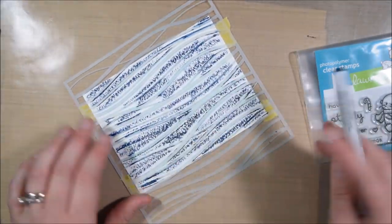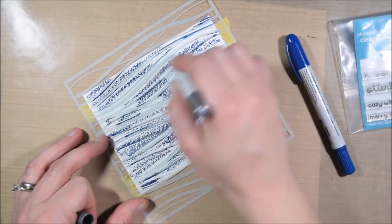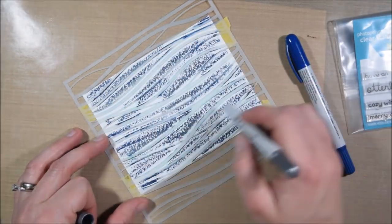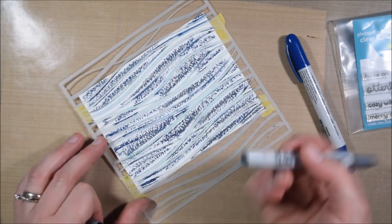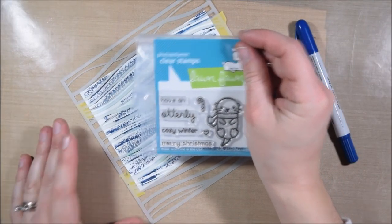I'm using the Simon Says Stamp Waves stencil over a piece of watercolor paper and taking my distress crayon and coloring in the areas between the stencil so that I can basically get a stenciled pattern with the distress crayon color. I also used a silver distress crayon over it.